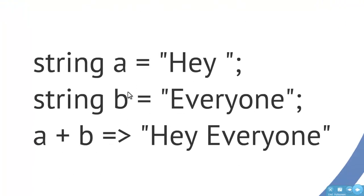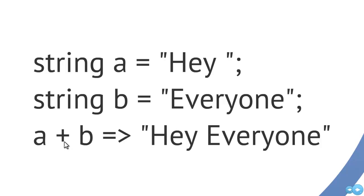Here we have two string variables, a and b. The string a has the value "a" and the string b has the string "everyone". So if we were to see a plus b, since we're dealing with strings, this plus operator is actually performing concatenation. Because our arguments are different, this takes on a different meaning. So behind the scenes, we already have what's considered to be operator overloading — dependent upon what arguments we have, we can have different computations going on.